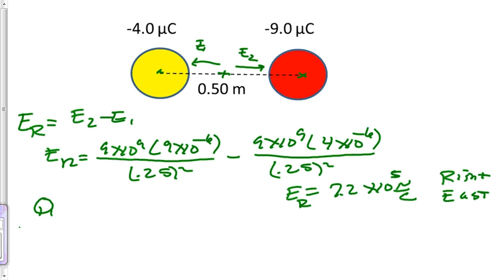q1 divided by x squared equals q2 divided by r minus x squared. And r is the distance between the two charges.